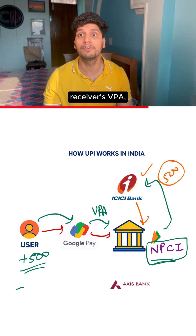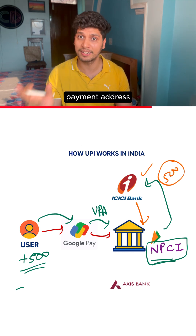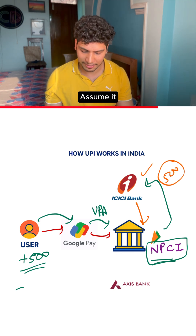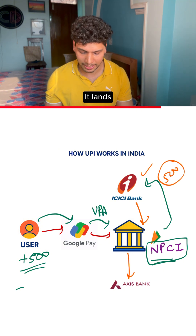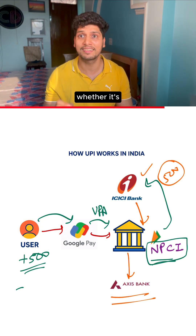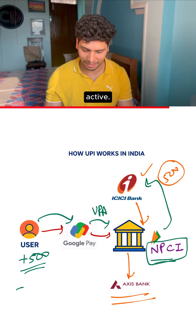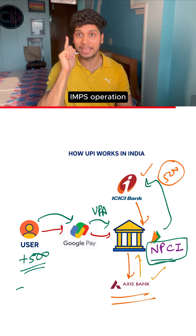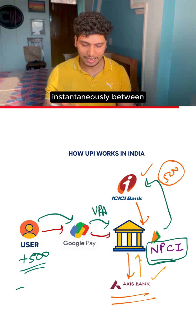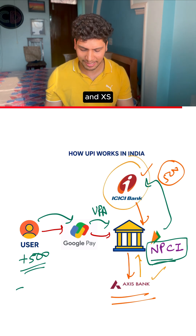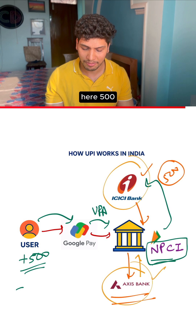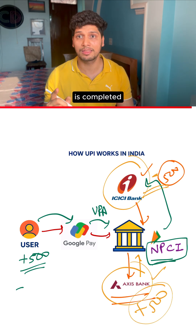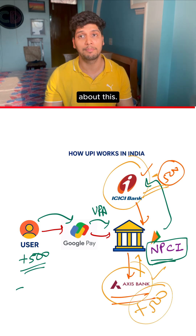NPCI then checks the receiver's VPA, which is the virtual payment address linked to their phone number, and extracts their bank details. Assume it also goes to ICICI bank. It verifies whether the account is active, and ICICI bank confirms yes. The NPCI server then performs an IMPS operation instantaneously between the two bank accounts — debiting Rs.500 from the sender and crediting it to the receiver. This is how the transaction is completed and both parties are notified.